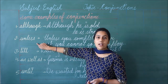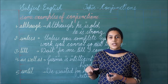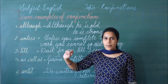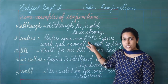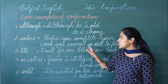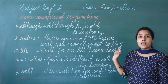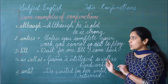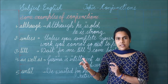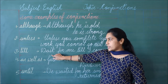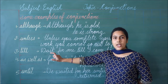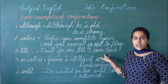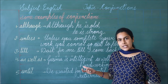Then the second one is 'unless'. Unless का मतलब होता है 'जब तक नहीं'. जब हम कुछ negative sense में बोलना चाहते हैं, तो हम unless का use करते हैं. Like: Unless you complete your work, you cannot go out to play. Means, जब तक तुम अपना work complete नहीं करोगे, तुम बाहर खेलने नहीं जा सकते. तो हम unless का use 'जब तक नहीं' इस way में करते हैं. Third one: 'till'. Till का meaning होता है 'जब तक'. Like: Wait for me till I come back — जब तक मैं वापस आऊँ, मेरा wait करना.